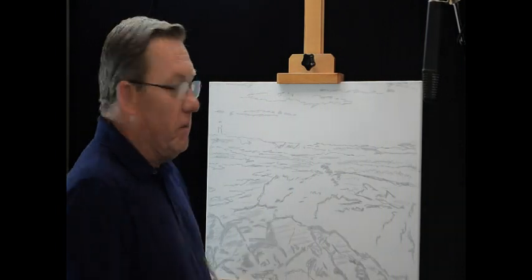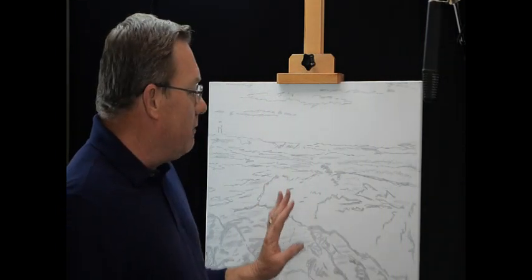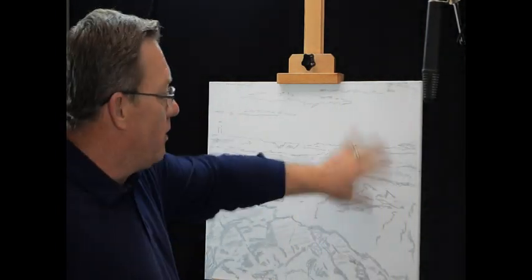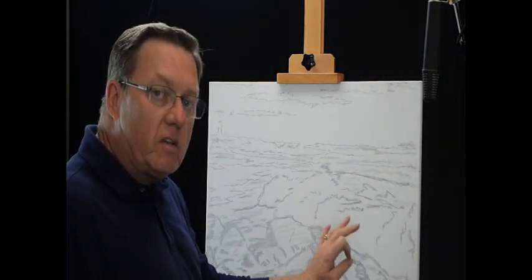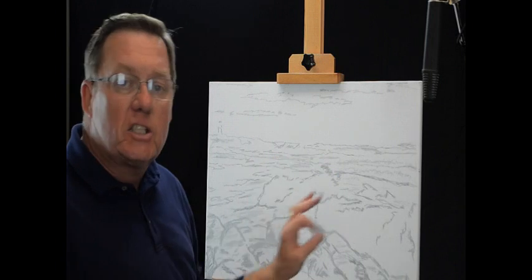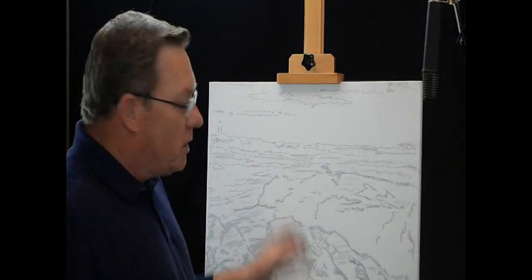The first thing we're going to do in this episode is tone the canvas. Toning the canvas means we're going to get rid of this white. We want a more base color to tone this canvas down to a point where we can actually see what the values are.